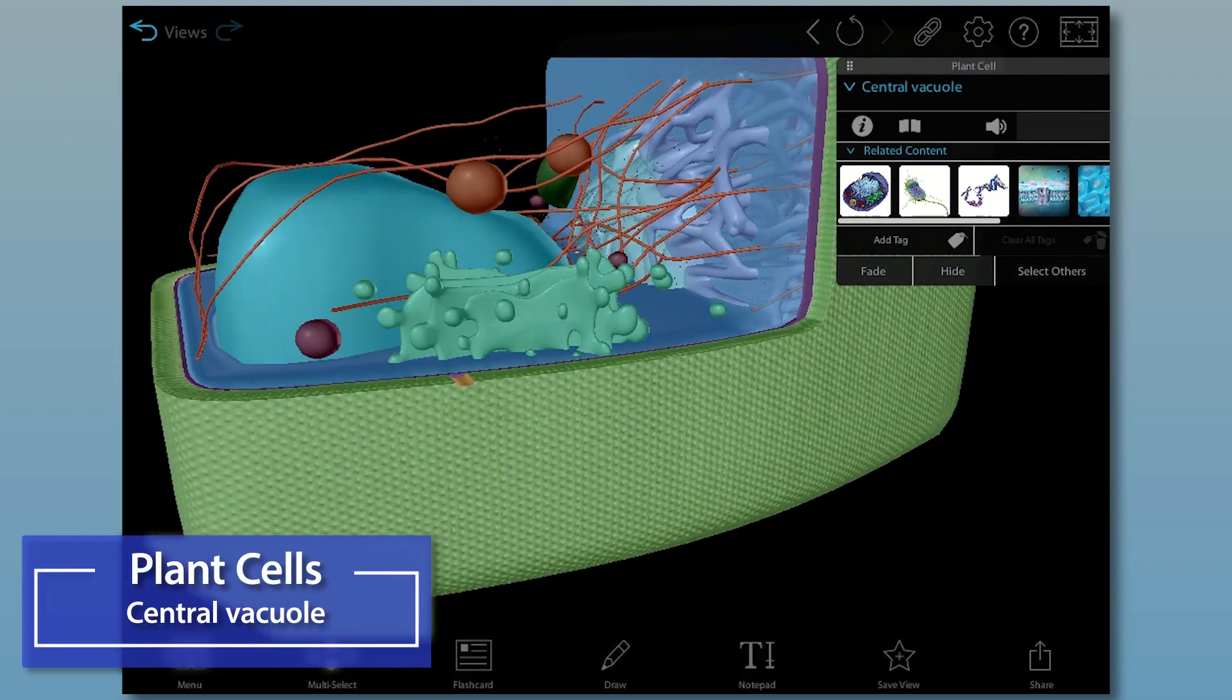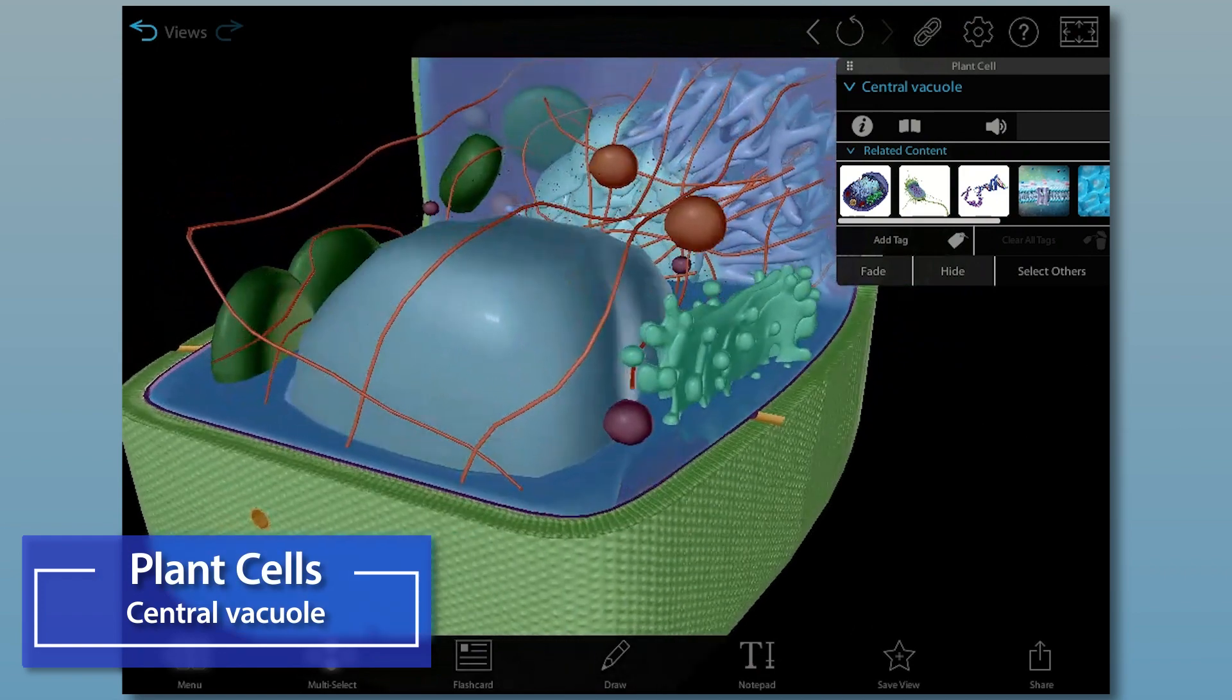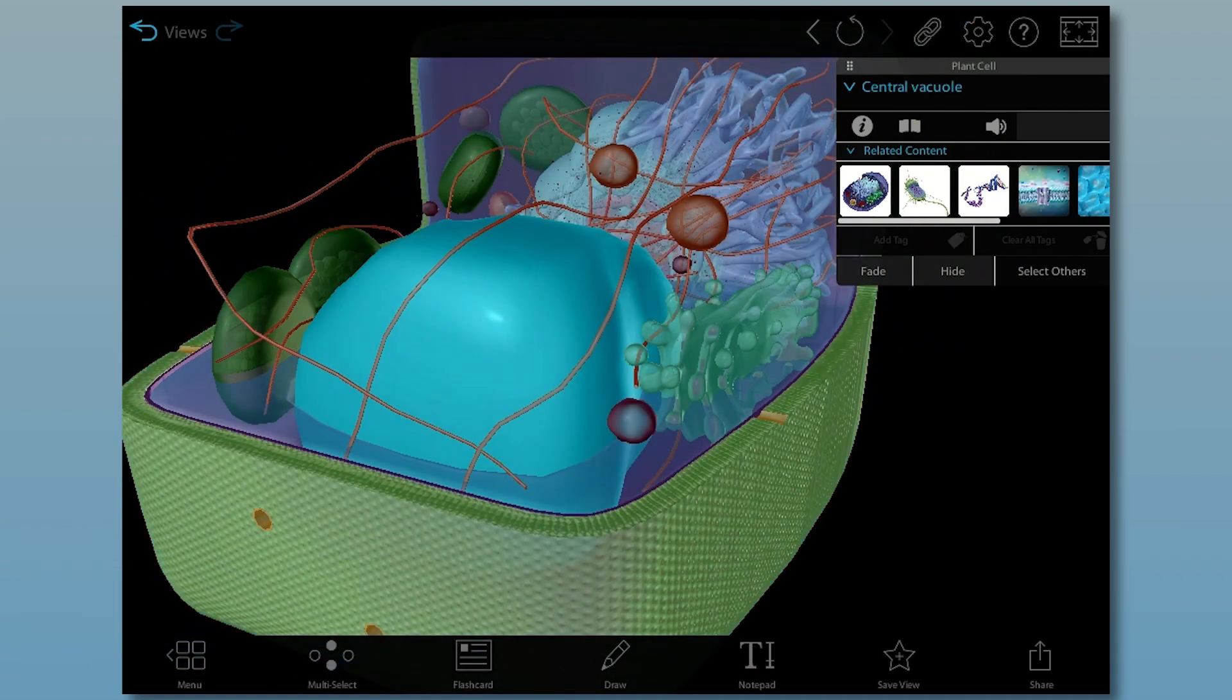Plant cells also contain a large membrane-bound central vacuole, which stores water and maintains turgor pressure within the cell.